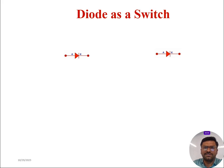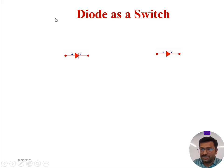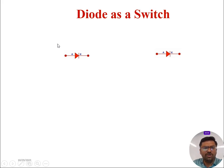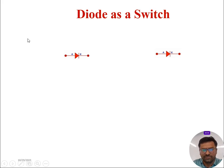We all know that switch is an electrical aspect. It has two states: switch on and switch off. In on state, switch allows the current to flow. In off state, switch blocks the current to flow.